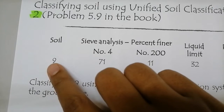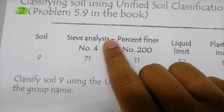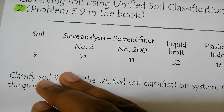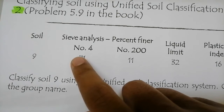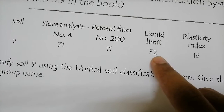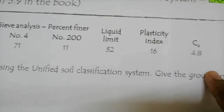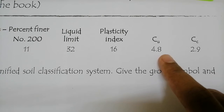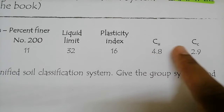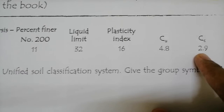The soil name is soil nine. From the sieve analysis, percent finer — which means percent passing — is 71% passing sieve number four and 11% passing sieve number two hundred. The liquid limit given is 32, plasticity index is 16. This example is a bit different from example one because we also have Cu and Cc values: Cu is 4.8 and Cc is 2.9.